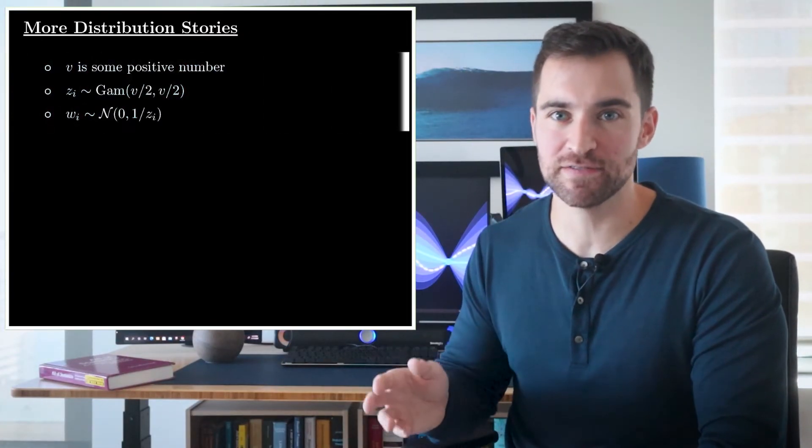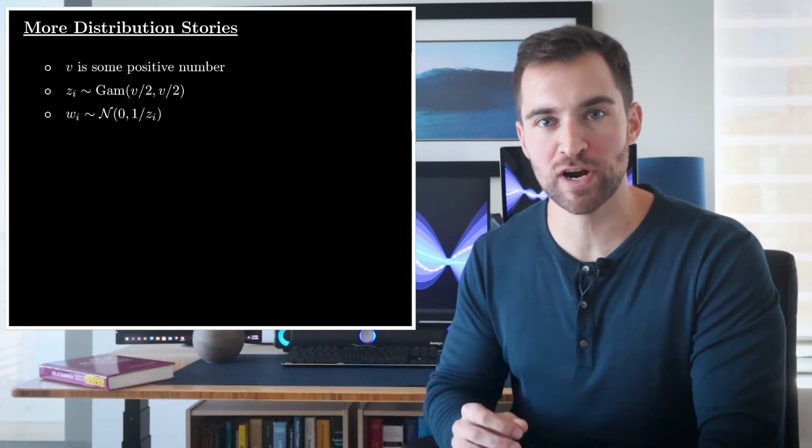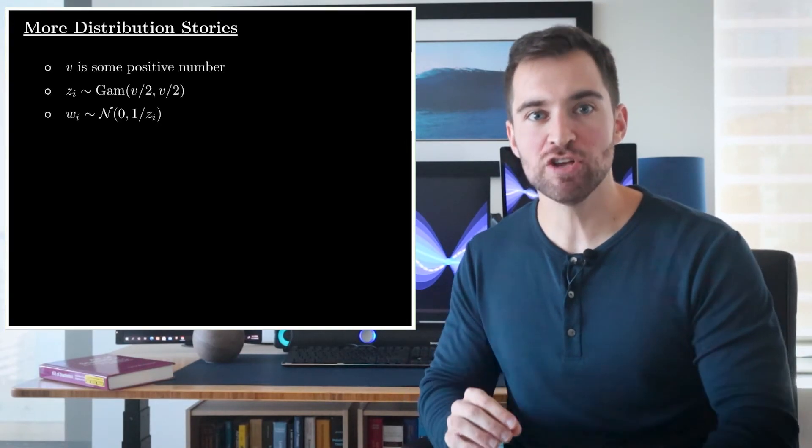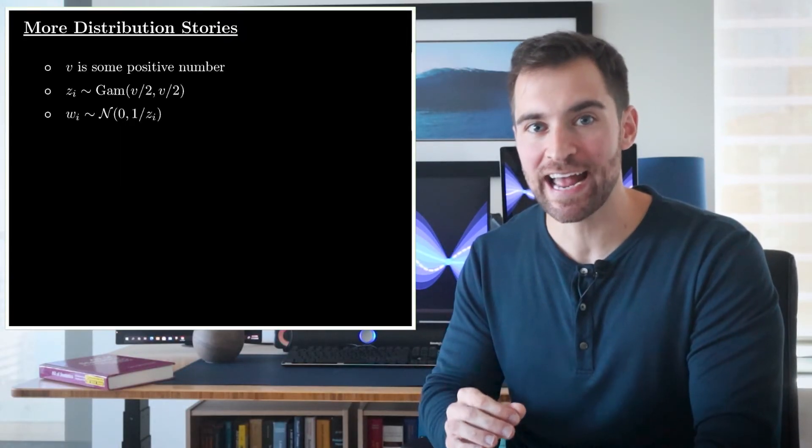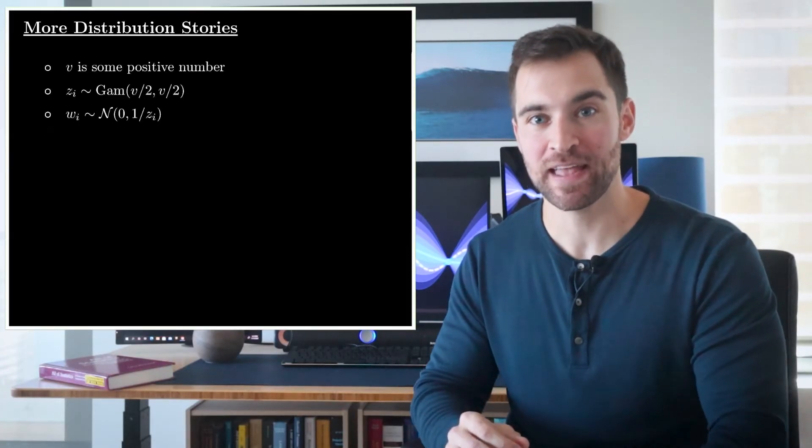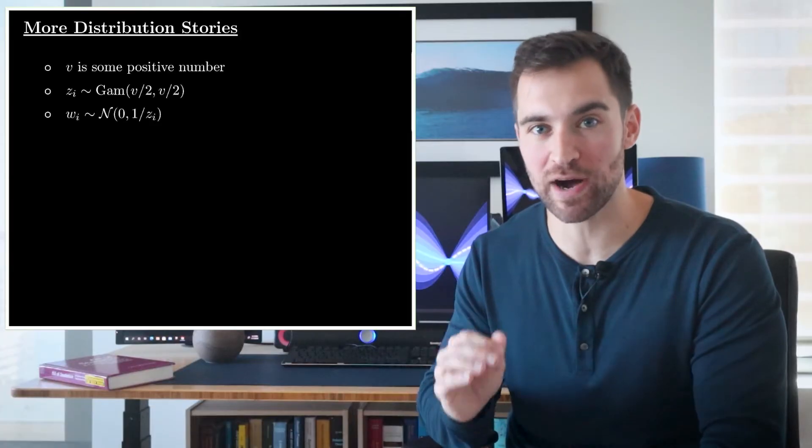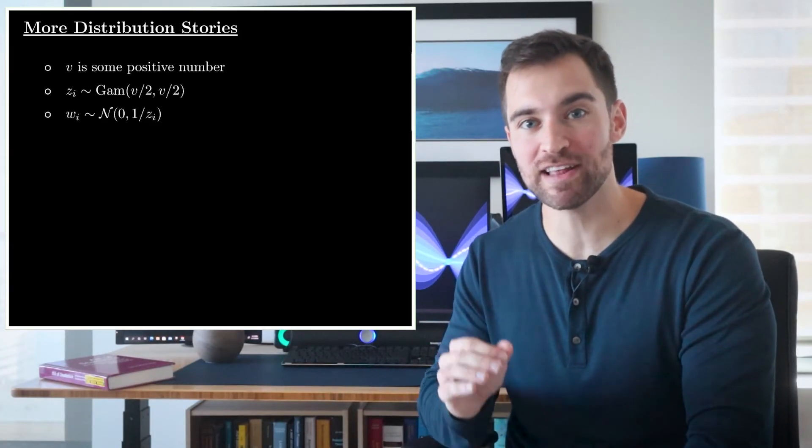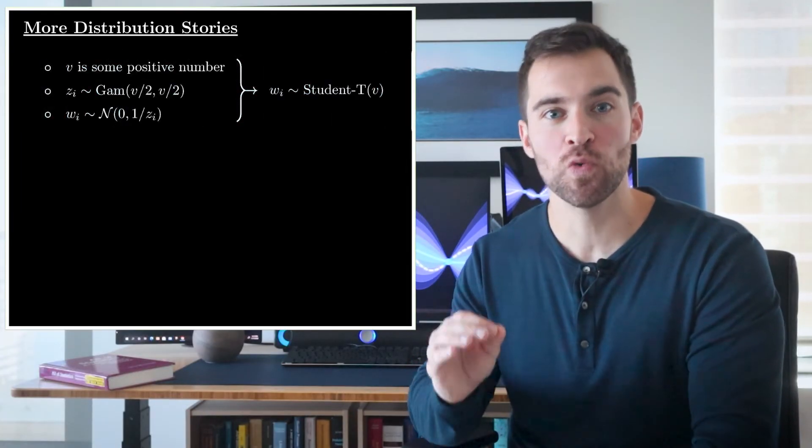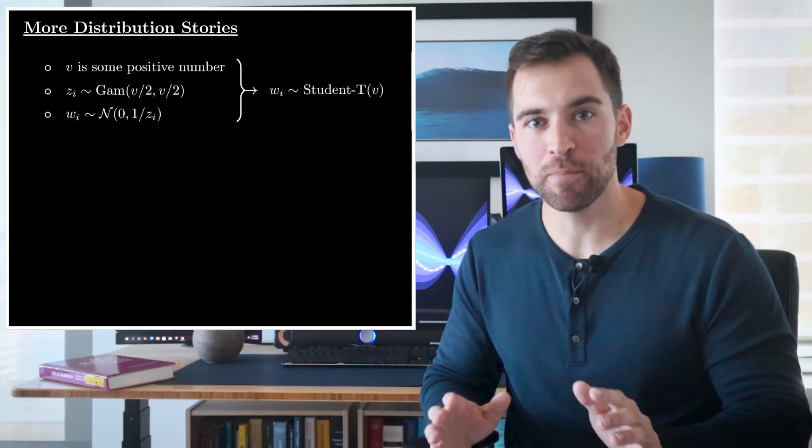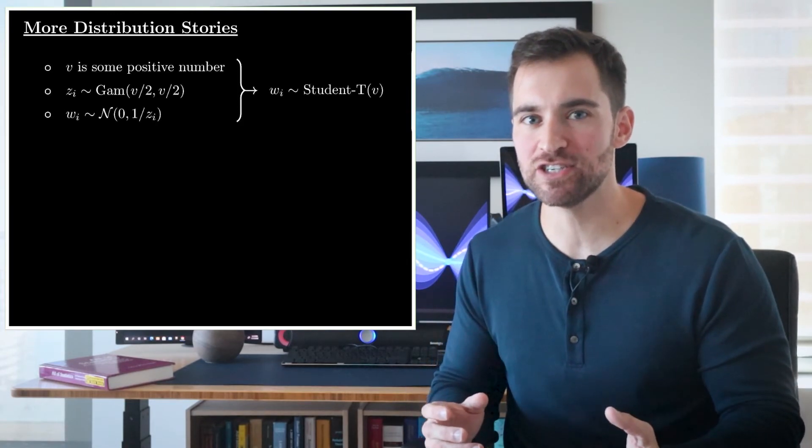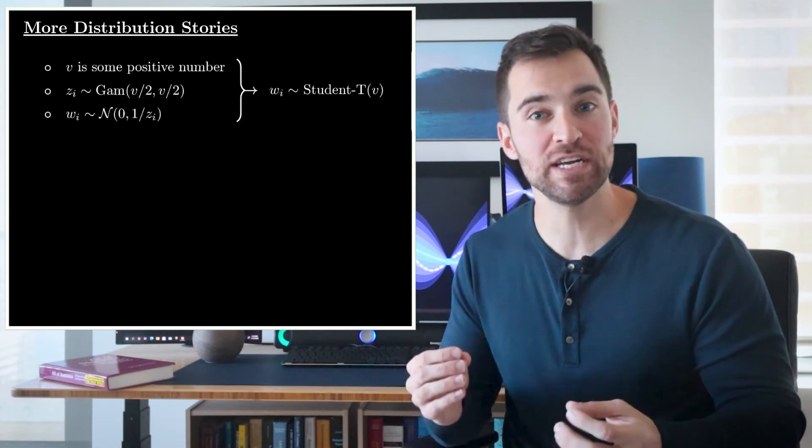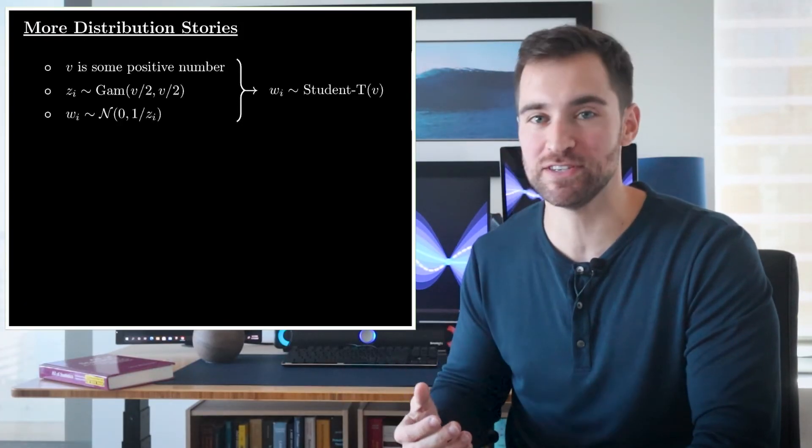Okay, say v is just some fixed positive number, and you have a gamma distribution with both its parameters set to half of v. Then you sample from that gamma some value, which I'll call zi. Then you use 1 over zi as the variance in a mean-zero normal distribution, and then you sample a value from that, which I'll call wi. Well, if you repeated that process many times, you'd discover that wi has a student t distribution with v degrees of freedom. I'm not sure why, but it was only when I learned that fact did I start to get comfortable with the student t distribution. The student t is just a bunch of normal distributions mixed together with different variances that bounce around according to an inverse gamma distribution.